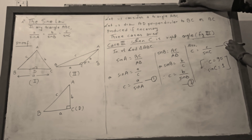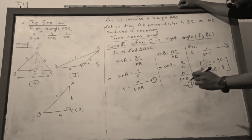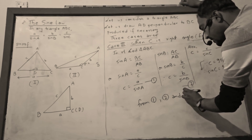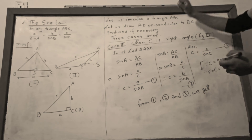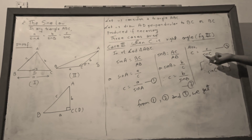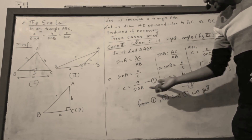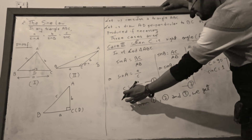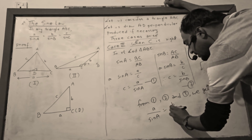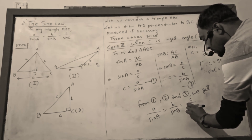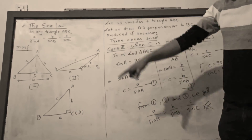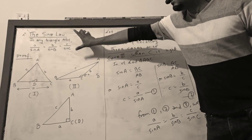Combining equations 1, 2, and 3: since the left-hand sides are all equal to c, the right-hand sides are also equal, giving a upon sin A equals b upon sin B equals c upon sin C. We have now proved all three cases and hence proved the sine law.